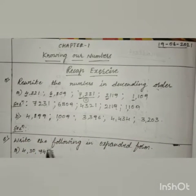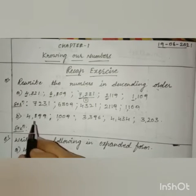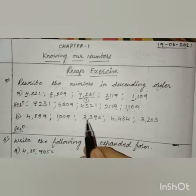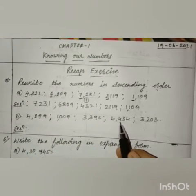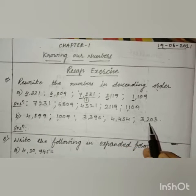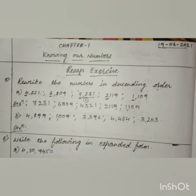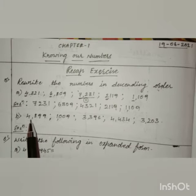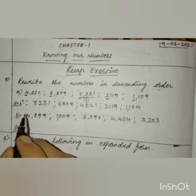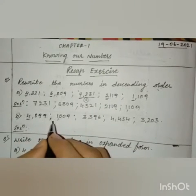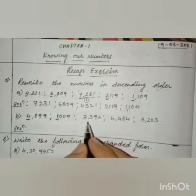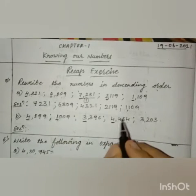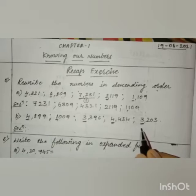Got it, children? Next, take another example — question number B. Here we have 4,899; 1,009; 3,396; 4,434; 3,203. Here also all the numbers have 4 digits. Let us compare the thousands place. Here we have 4, here we have 1, here we have 3, here also we have 4 in the thousands place, and in this number also we have 3.